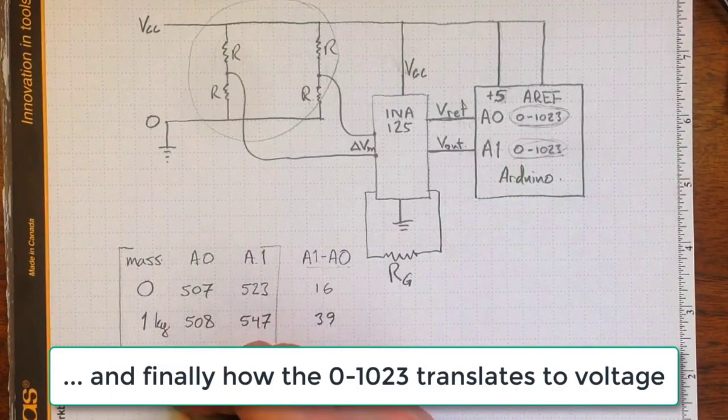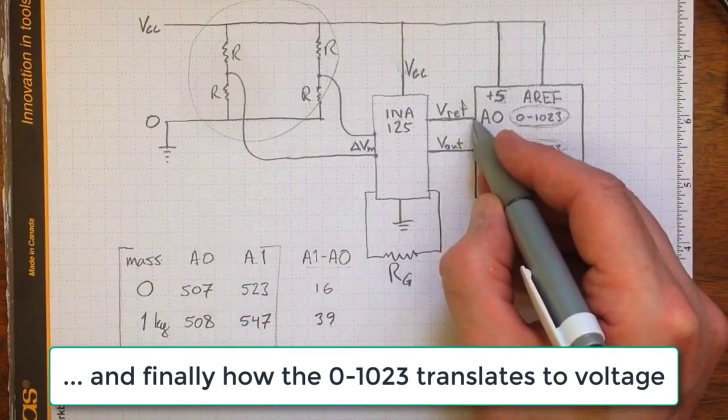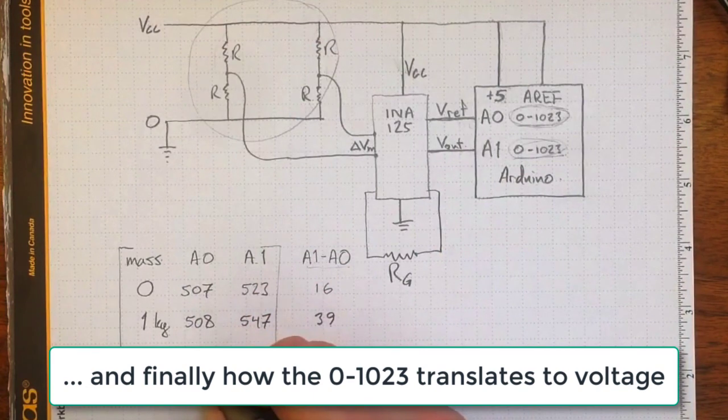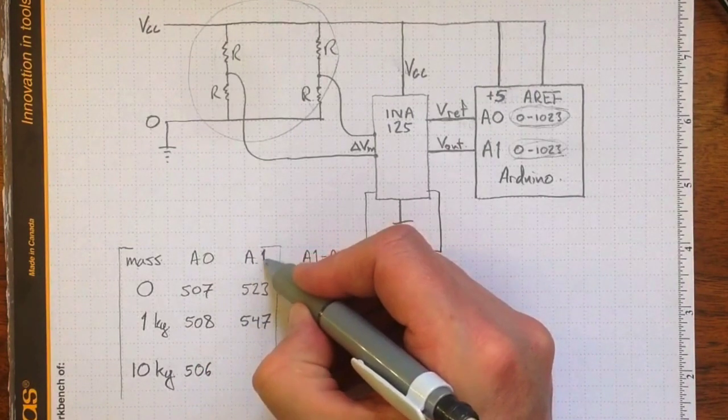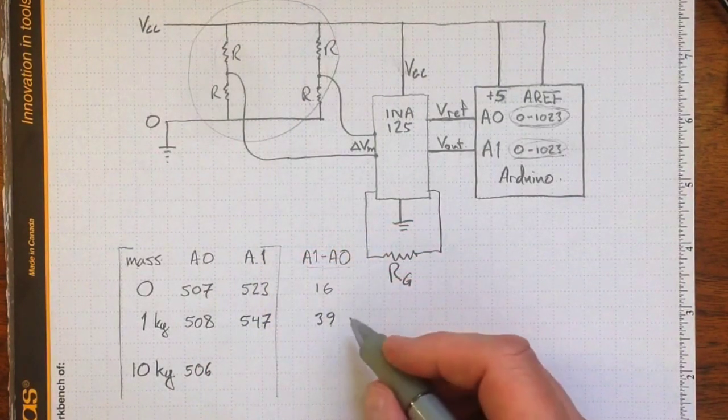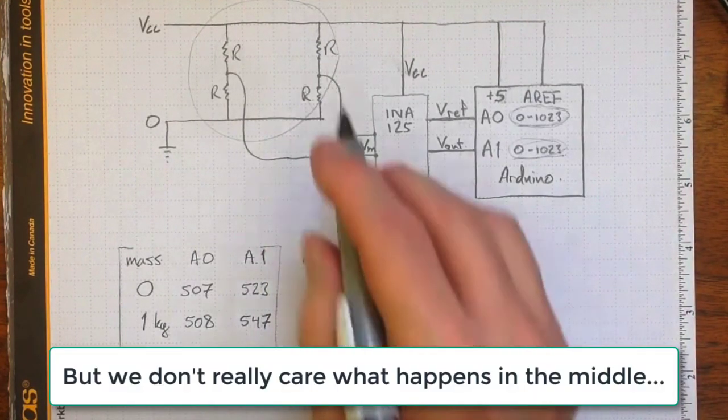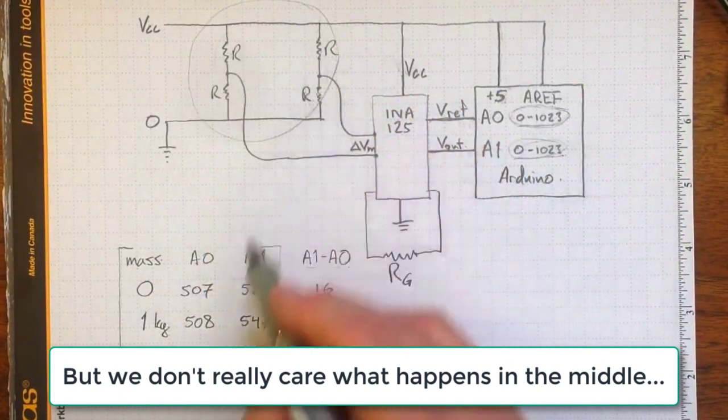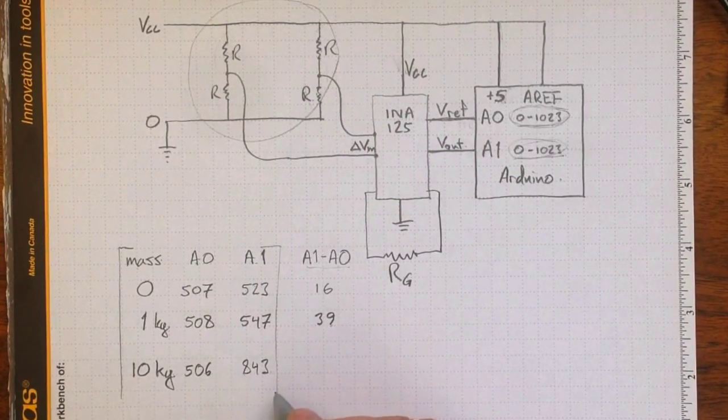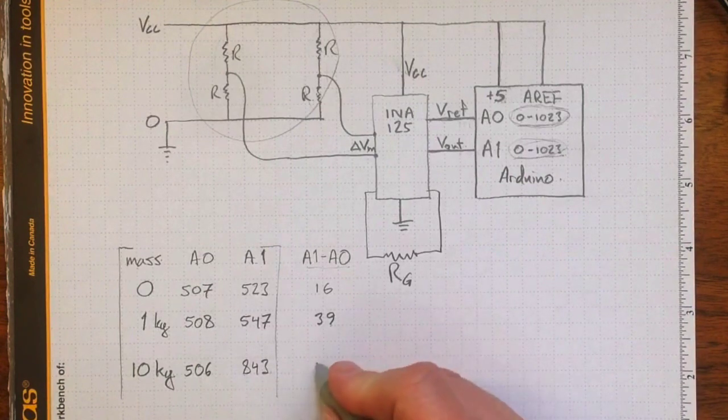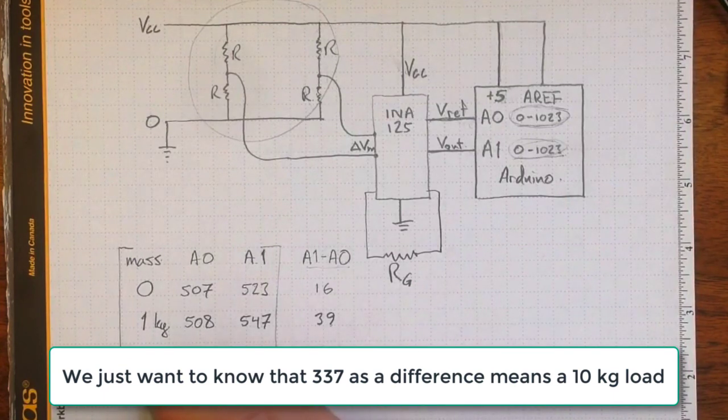10 kilograms. I would expect to see still this A0, this reference voltage, staying about 2.5 volts. Might be 507 again, might be 506. It'll be some value. And then when we measure A1, it's going to go up considerably. It might be 843, indicating that we've got considerably more change in the resistances because we've got a considerably bigger load here. 843 minus 506 is going to be 337. So that's the difference that corresponds to 10 kilograms.